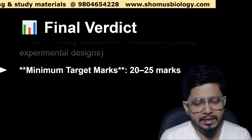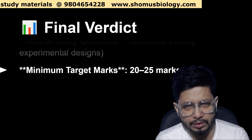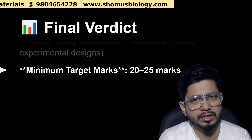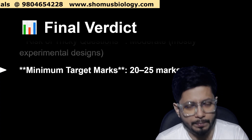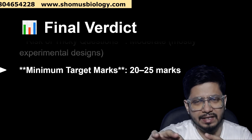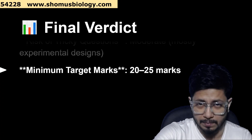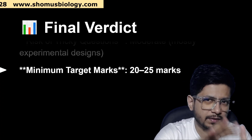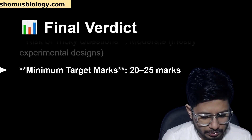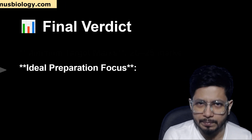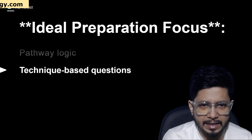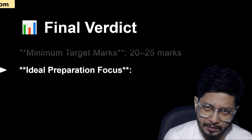In this 20 to 25 marks of cell biology, we are not talking about only unit two. Cell biology transcends unit two — it spans unit four and parts of unit six as well. Cross-unit topics include cancer biology, cell signaling, cell cycle regulation, and cell electrophysiology. So cell biology is not limited to unit two — it is beyond unit two. Altogether, 20 to 25 marks should be your target. The ideal preparation focus is core concepts, pathway logics, and technique-based questions.